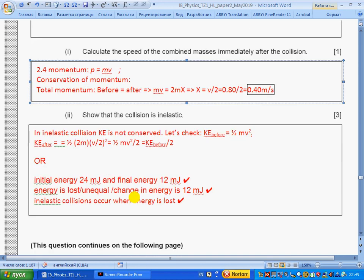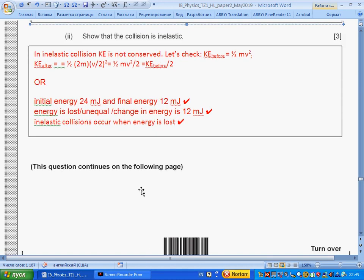Part ii: Show that the collision is inelastic. In inelastic collision, kinetic energy is not conserved. Let's check. Kinetic energy before was half mv². Kinetic energy after is two times less. In the mark scheme, they give values: initial energy 24 millijoules, final energy 12 millijoules, energy lost 12 millijoules. Inelastic collisions occur when energy is lost.